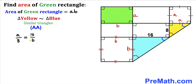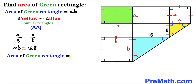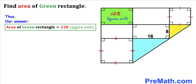Now let's cross multiply: A times B equals 16 times 8, which is 128. We know that the area of this green rectangle is A times B, and we have found that A times B equals 128. Therefore, the area of this green rectangle turns out to be 128 square units. That's our final answer. Thanks for watching, and please don't forget to subscribe to my channel for more exciting videos. Bye!